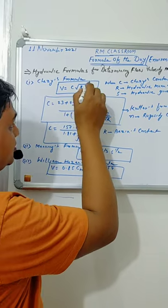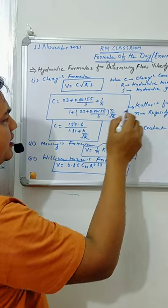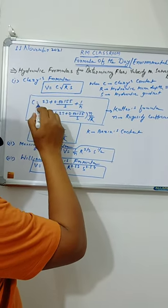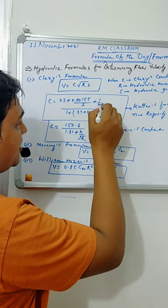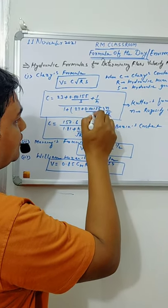This Chezy's coefficient c can be computed by Cutter's formula or Bazin's formula. According to Cutter, c is equal to 23 plus 0.00155 by s plus 1 by n, plus 1 plus 23 plus 0.00155 by s into n by square root of r, where n is the rugosity coefficient.